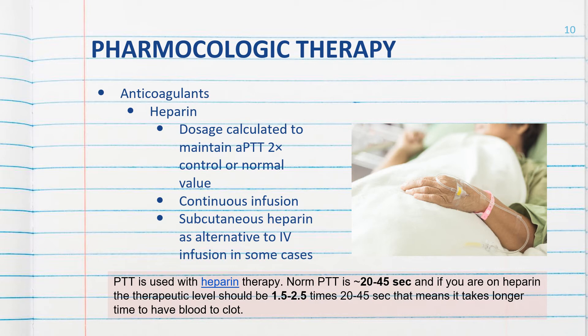When a patient is diagnosed with a DVT, they are admitted to the hospital and there will be a STAT order for IV heparin. We want to get their heparin infused as quickly as possible. Remember what heparin does — it prevents the clot from getting larger and prevents the development of new clots. We do not give heparin to eliminate the clot; the patient's own lytic system and enzymes will break down the clot.